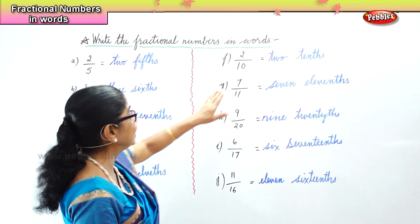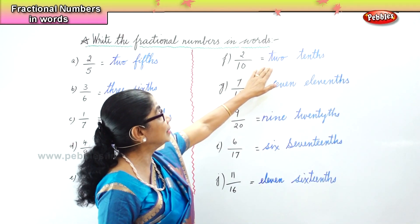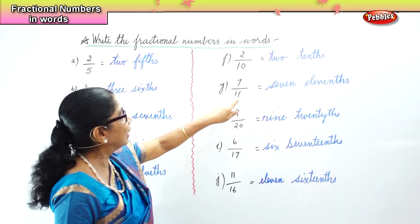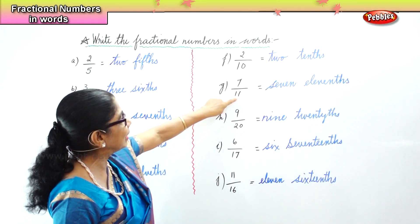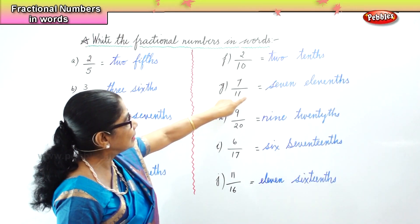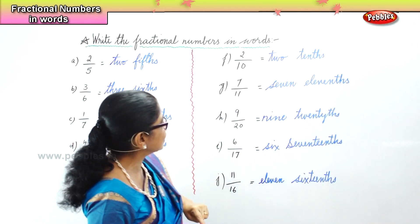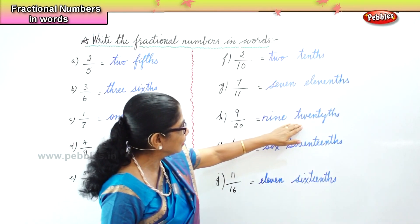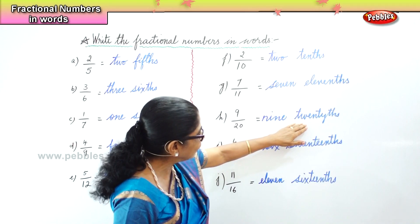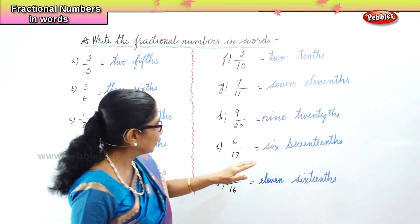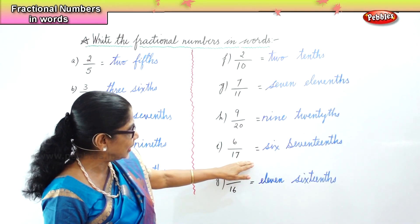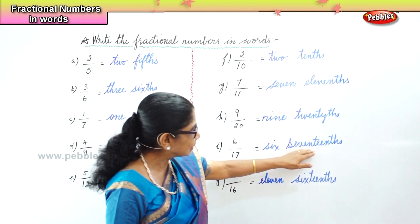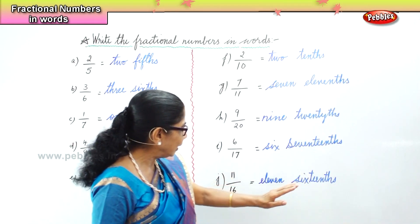2 by 10 — two tenths. 7 by 11 — seven elevenths. 9 by 20 — nine twentieths. 6 by 17 — six seventeenths.